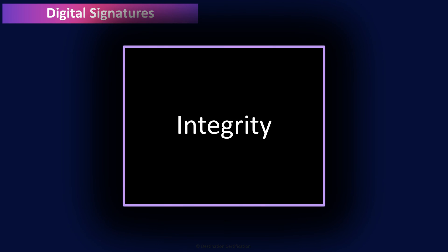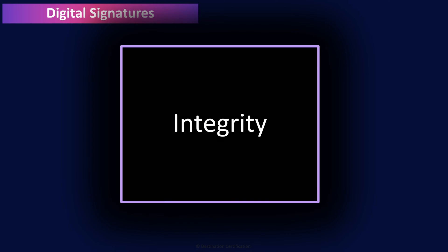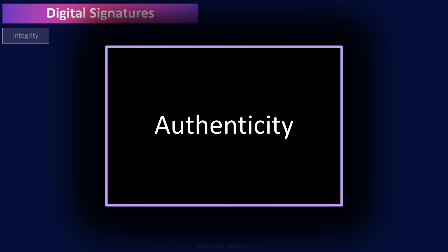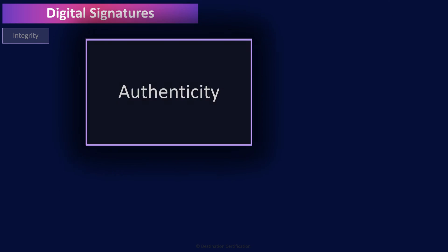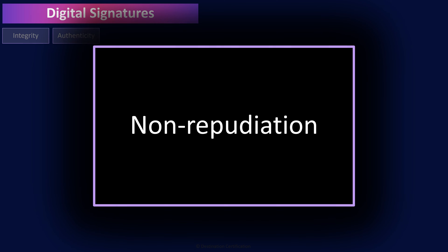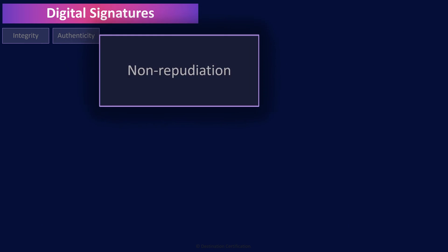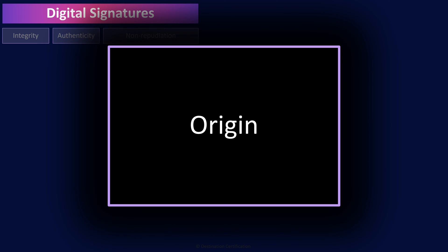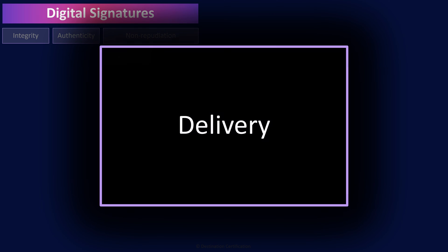Integrity means that we can tell if a message or a file has been changed or modified in any way. Authenticity means that we know who the message came from — we know who the sender is. And non-repudiation means someone cannot deny the validity of something. Non-repudiation of origin means the sender cannot deny they sent exactly the message that was received. And non-repudiation of delivery means the receiver cannot deny that they received the exact message that was sent.